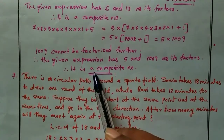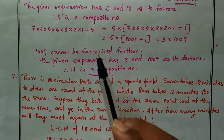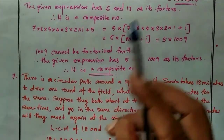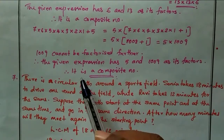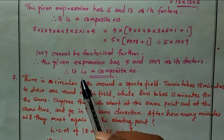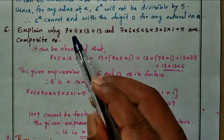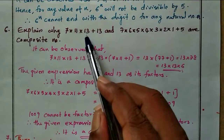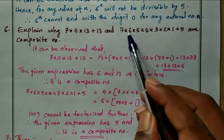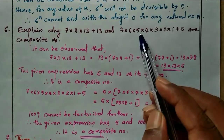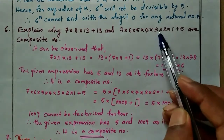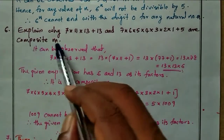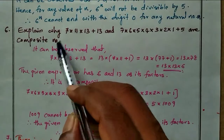Therefore it is a composite number. So both numbers — 7×11×13 + 13 and 7×6×5×4×3×2×1 + 5 — are composite numbers.